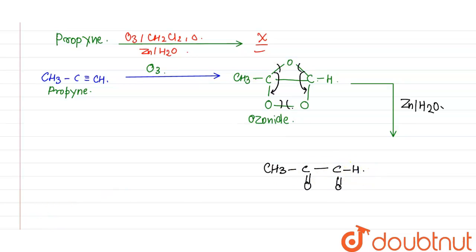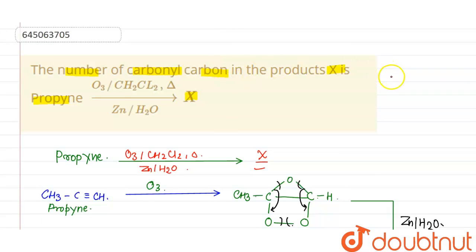So this is the product X. Now it was asked that number of carbonyl carbon, so this is the carbonyl carbon and this is the carbonyl carbon, means it has C=O. So these are two carbonyl carbons present here. So the number of carbonyl carbons in the product X is two.